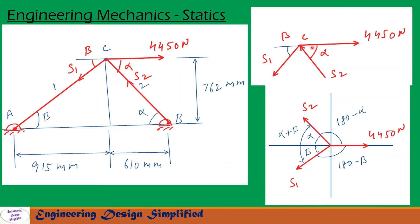At point C we have horizontal load 4450 Newton acting towards this direction and a tension S1 is acting towards this direction. Since this angle is beta, this angle is also beta, so this angle is also beta. The compression in this bar BC is shown here, and since this angle is alpha, this is alpha, this is also alpha.